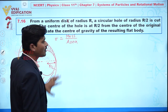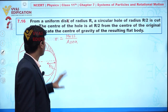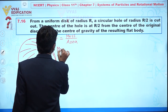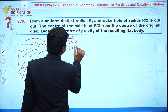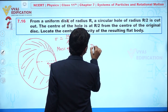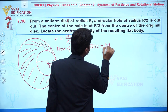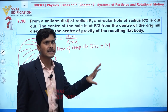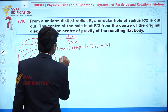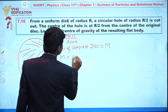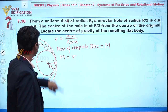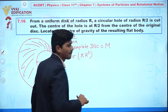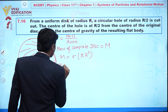When we talk about a uniform disc with no cavity, I take the mass of the complete disc as capital M. So mass of the complete disc M equals sigma times the area of the disc, which is pi R squared. Therefore M = σπR².